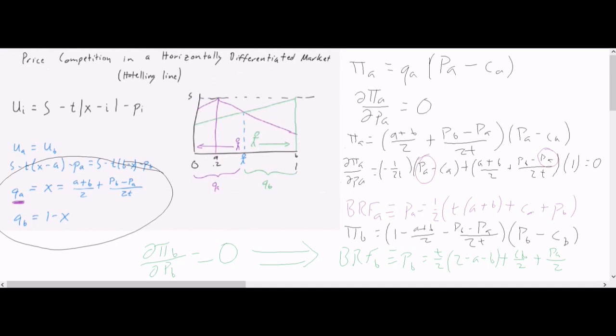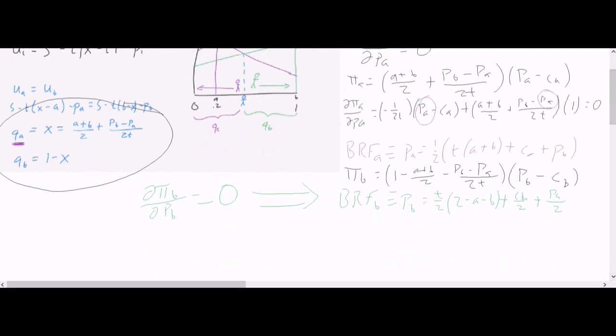And I skipped some tedious algebra to get there, but what do we do with these once we have them? Well, what we're going to do is we're going to find the intersection. Where do these two things overlap each other? And the way we do that, there's two options. We can either substitute firm A's best response into firm B, which would be plugging in all of this stuff right where firm A's price goes, or we can substitute firm B's price, which is set equal to all of this stuff, into there. Either one works. They should get us the right answer.